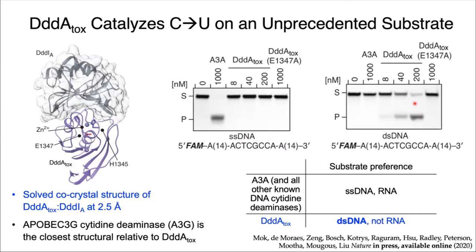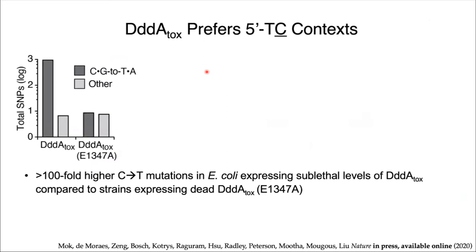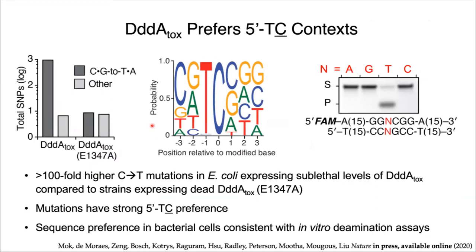The team went on to further validate the deamination properties in E. coli. When they overexpressed DddA in E. coli, they found that strains containing the active deaminase had 100-fold higher C to T mutations compared to strains that expressed the catalytically inactive deaminase. When they looked at the positions of these mutations, they found that most of the mutated cytidines were preceded by a thymine in the 5' prime position. This strong 5'-TC preference was supported by in vitro assays, showing deamination when N equals T, but not for other nucleotides.